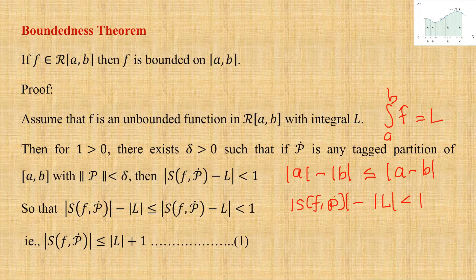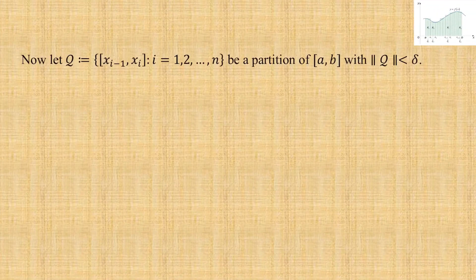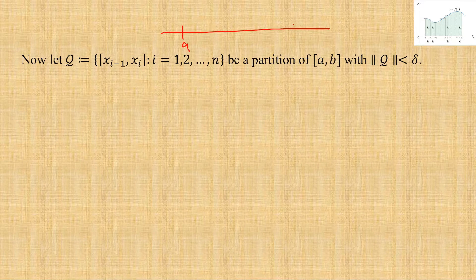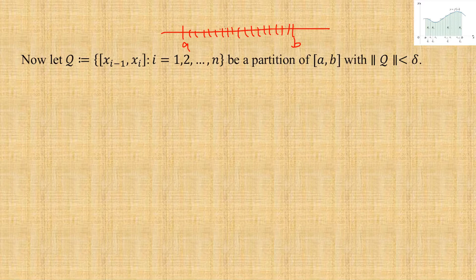We will take a partition Q of the closed interval [a,b] with norm less than δ. Let Q = {[x_{i−1}, x_i] : i = 1, 2, ..., n} be a partition of the closed interval [a,b] with norm of Q less than δ. Whenever P̃ is a tagged partition with norm less than δ, |S(P̃)| < |L| + 1.